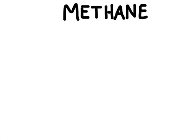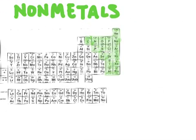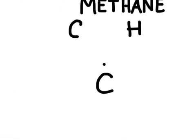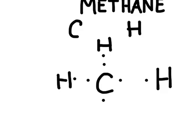Let's do one more example: methane. Methane is a molecule composed of hydrogen and carbon. We'll start by drawing a Lewis structure for each element. Carbon is in group four on the periodic table, so it has four valence electrons — drawn symmetrically. Hydrogen has just one valence electron. Carbon needs four more electrons, and since hydrogen has one valence electron, if we continue adding hydrogens all the way around, we should be able to give carbon a complete octet.